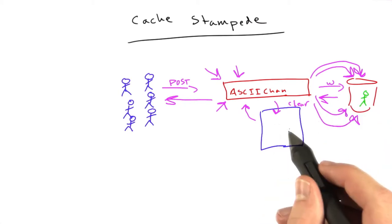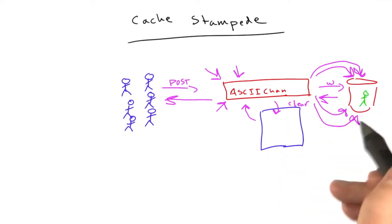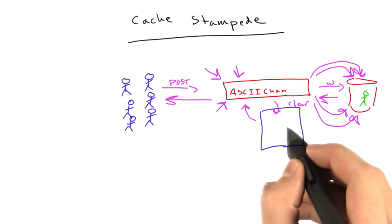Because they're all like, okay, cache is empty. We need to update the cache, and then bam, bam, bam, bam, bam. They all hit the database running the exact same query just so they can store it in the cache.